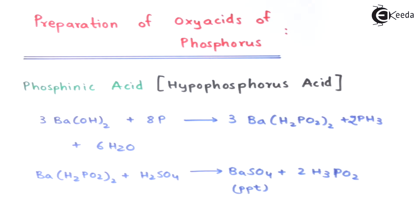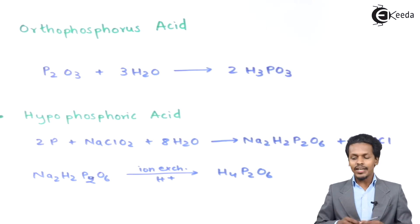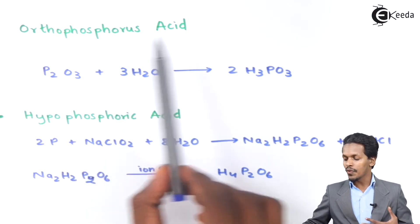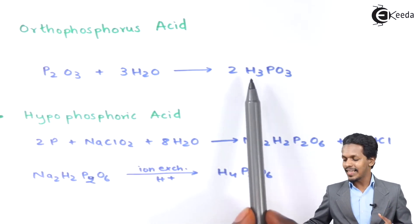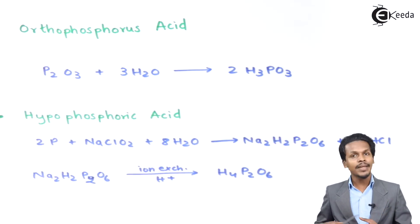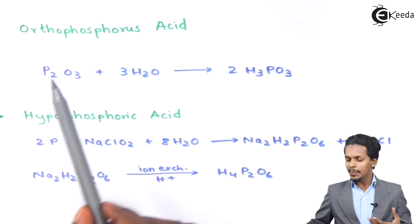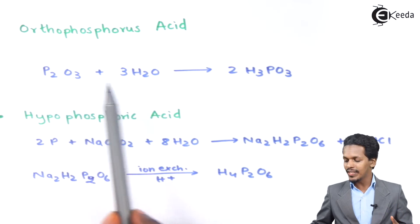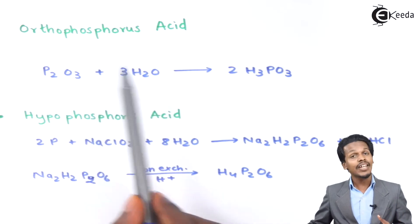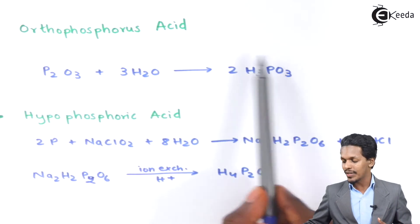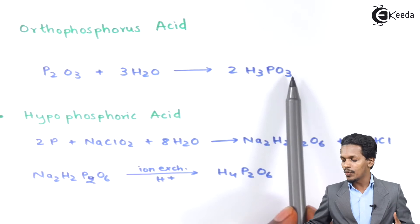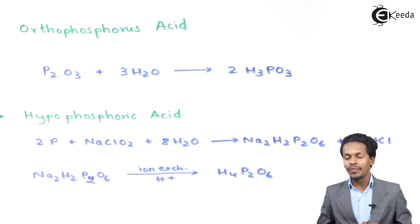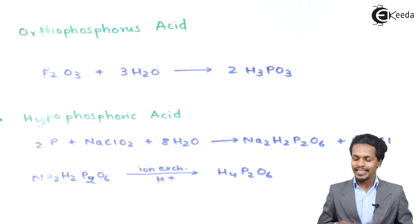The next reaction is the preparation of Orthophosphorous Acid, that is H₃PO₃. This can be prepared by reacting P₂O₃ with water to get 2 moles of H₃PO₃, which is known as Orthophosphorous Acid.